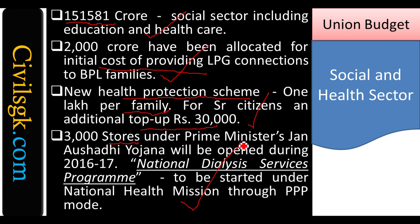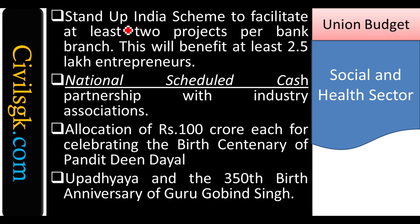Stand Up India is a new scheme where each bank branch has to finance at least two projects — this will benefit at least 2.5 lakh entrepreneurs. Like Make in India and Skill India, Stand Up India requires every bank to finance at least two projects per branch. This is a very good scheme for aspiring entrepreneurs.